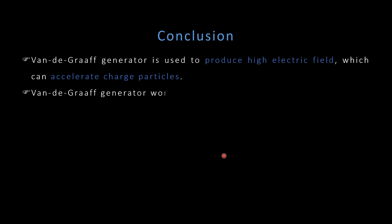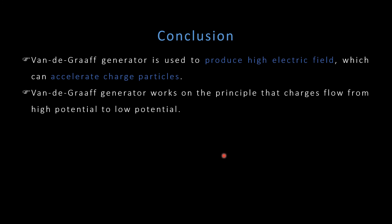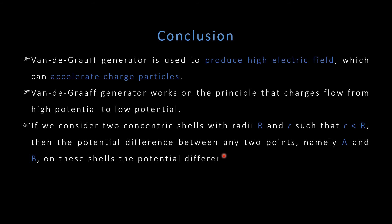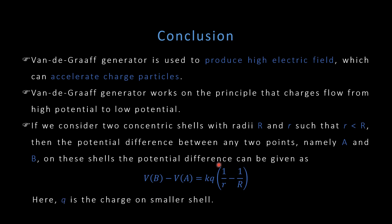The 1d graph generator works on the principle that charges flow from higher potential to lower potential. There are two concentric shells in the 1d graph generator, and the potential difference between these two shells is given by: VB minus VA is equal to kq times bracket one by radius of smaller shell minus one by radius of bigger shell. B is a point on the inner shell and A is a point on the outer shell. That is all about the construction and working of the 1d graph generator.